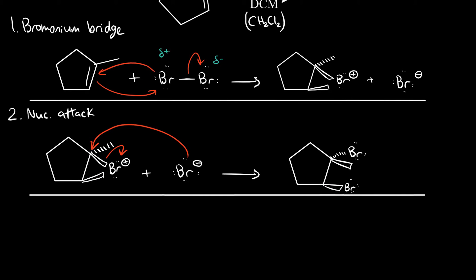And that's the entire mechanism. We start out by forming the bridge, and then the bromide formed as a result of bridge formation acts as a nucleophile and attacks that very bridge. The result is an anti-addition of two bromines to an alkene.